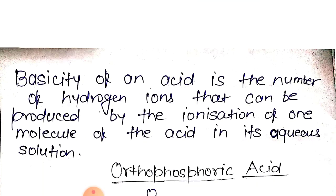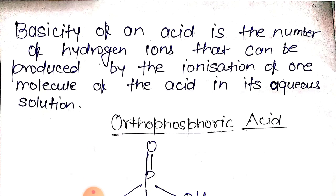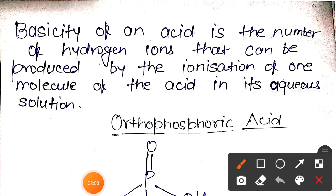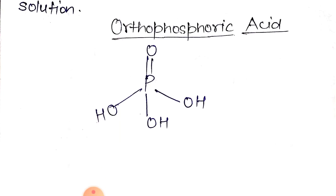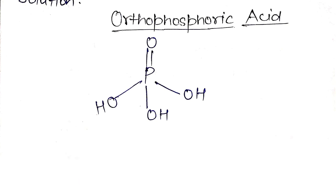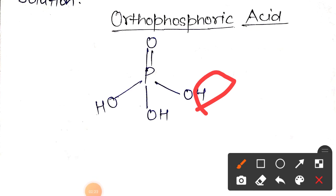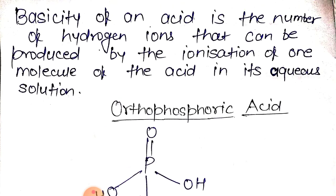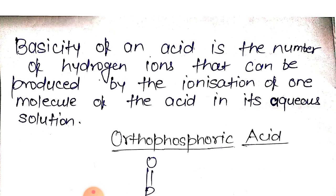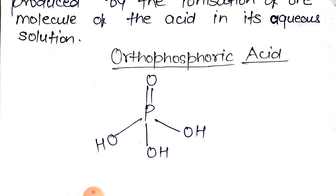Now let's take the definition of basicity. The basicity of an acid is the number of hydrogen ions that can be produced by the ionization of one molecule of the acid in its aqueous solution — that is, the number of hydrogens which can be replaced or ionized.